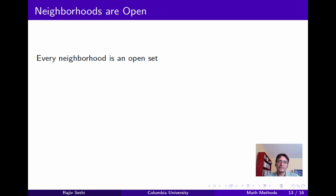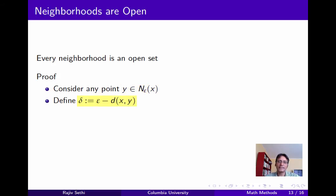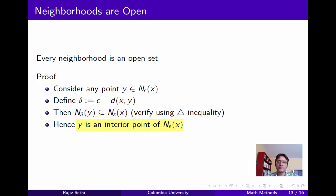Next we'll show that neighborhoods are in fact open sets. Consider any point x in a metric space and any point y in the epsilon neighborhood of x. Define delta as epsilon minus the distance between x and y — this must be strictly positive since y is in the epsilon neighborhood of x. You can use the triangle inequality to verify that the delta neighborhood of y is fully contained in the epsilon neighborhood of x, which immediately implies that y is an interior point of the epsilon neighborhood of x. Since this is true for every y, every element in the epsilon neighborhood of x is an interior point, and therefore the epsilon neighborhood of x is an open set.